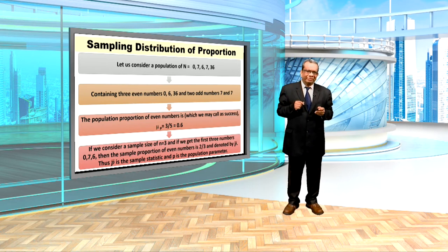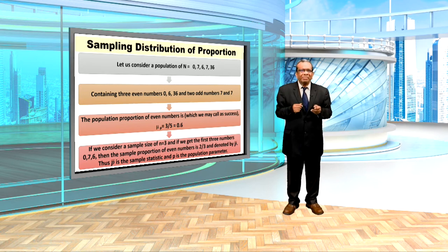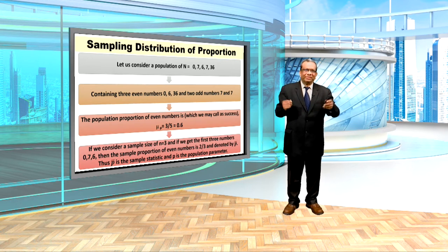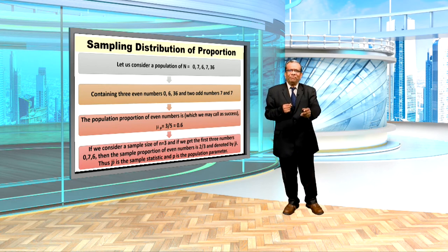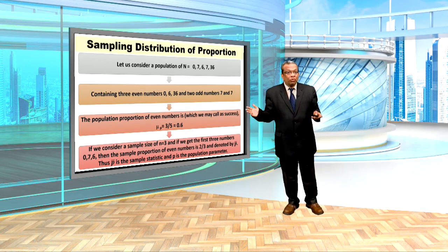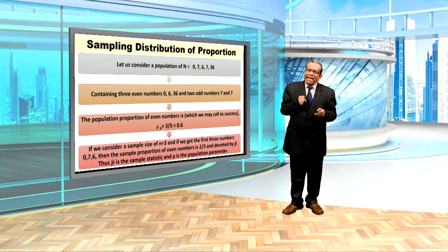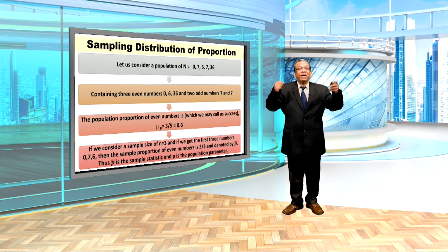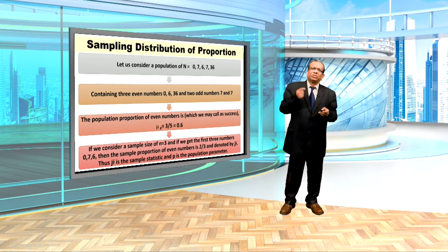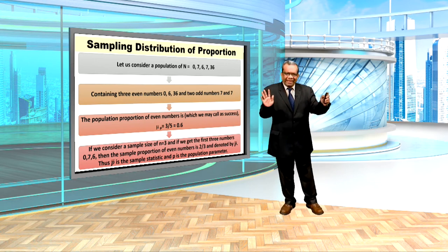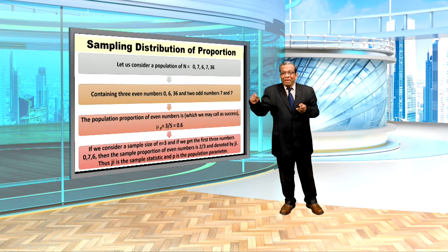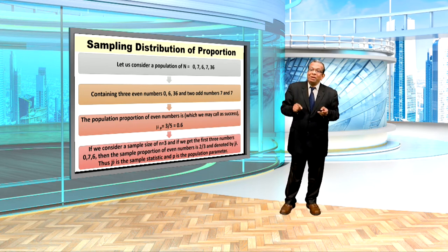Now, sampling distribution of proportion. Let us consider a population of 5 elements, in which we have 2 odd numbers and 3 even numbers. Therefore, we know about the population. The population proportion of even numbers, which we may call success, is equal to 3 by 5, which is 0.6. Now, let us consider a sample of 3 from the population of 5 elements. For the first sample we may get, for example, 0, 7, 6. The proportion of even numbers is 2 by 3, denoted by p-bar. Thus, p-bar is the sample statistic and p is the population parameter.